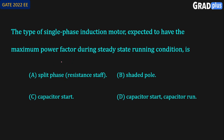Let us look at the power factors of these different types of single-phase induction motors. The split phase induction motor has a power factor of around 0.6. The shaded pole motor has a very low power factor. The capacitor start motor has a power factor of 0.6 lagging. The capacitor start capacitor run motor has a better power factor compared to split phase, shaded pole, and capacitor start motors.